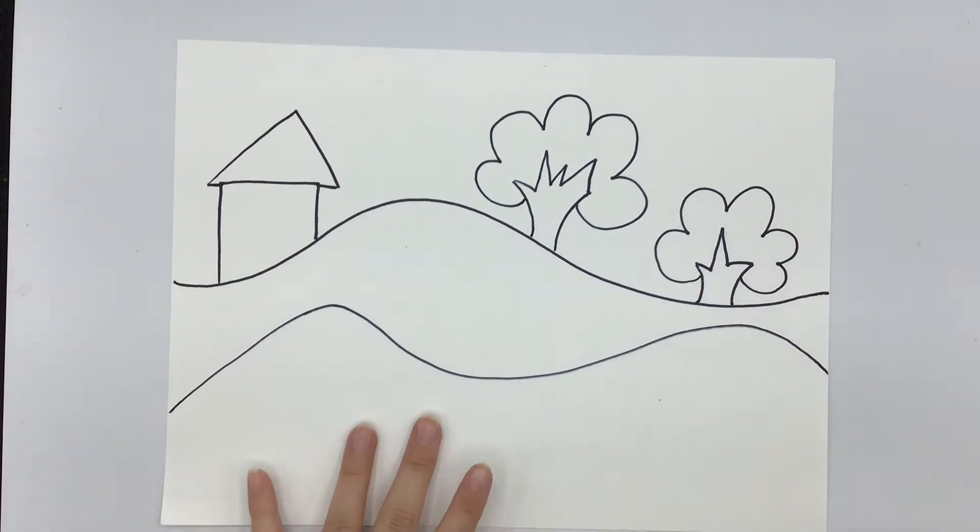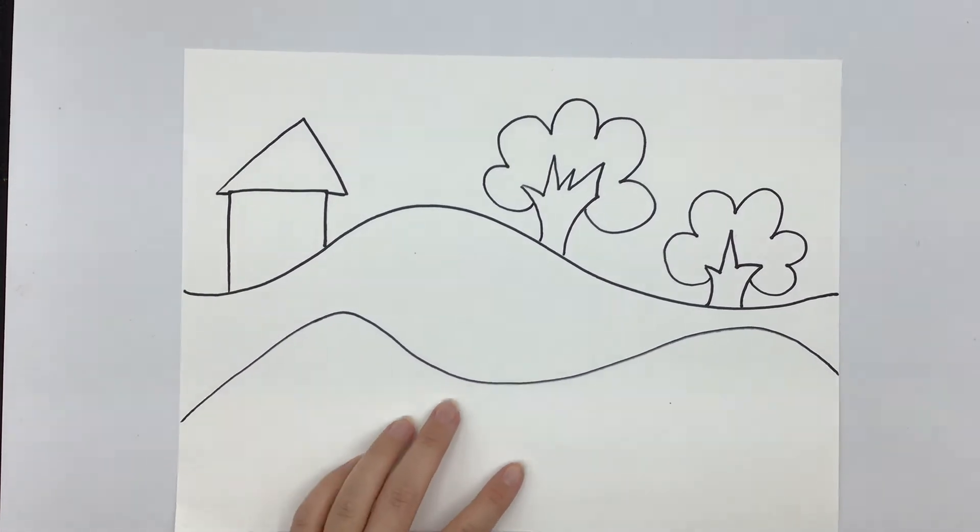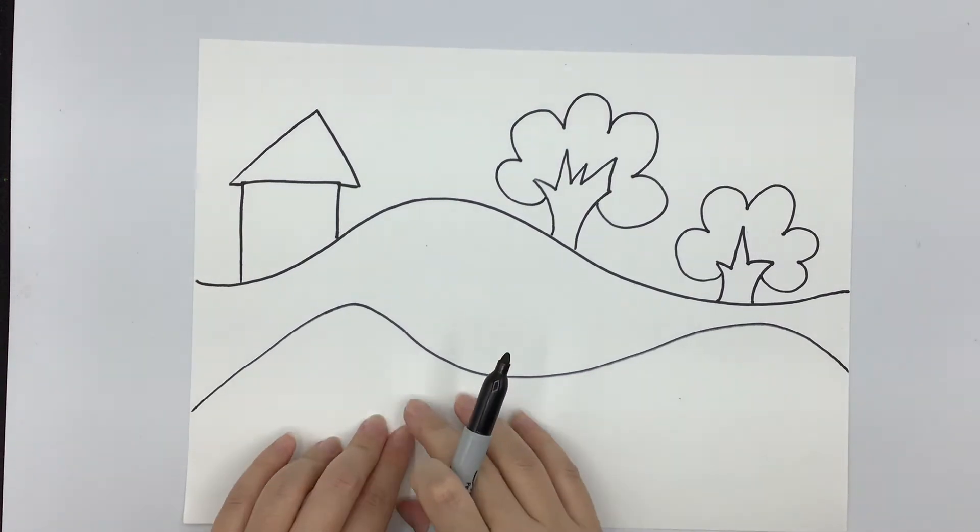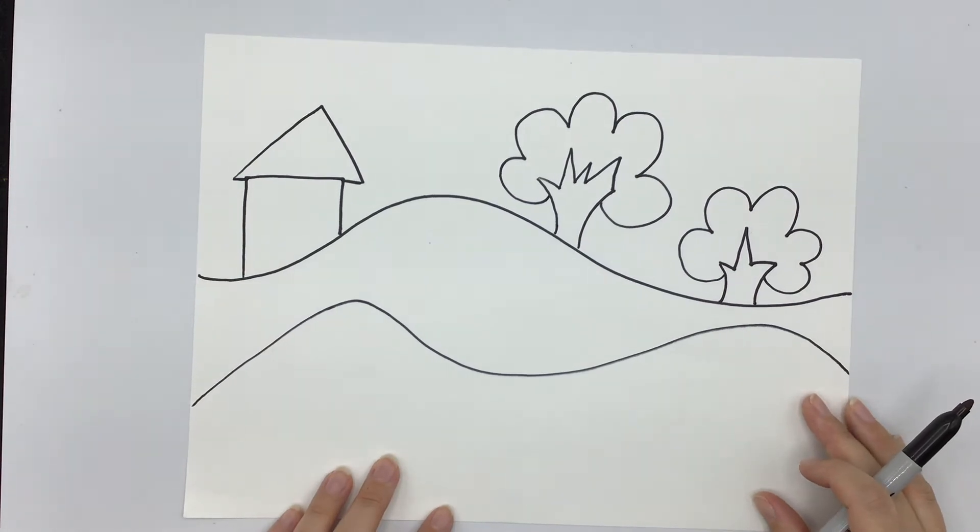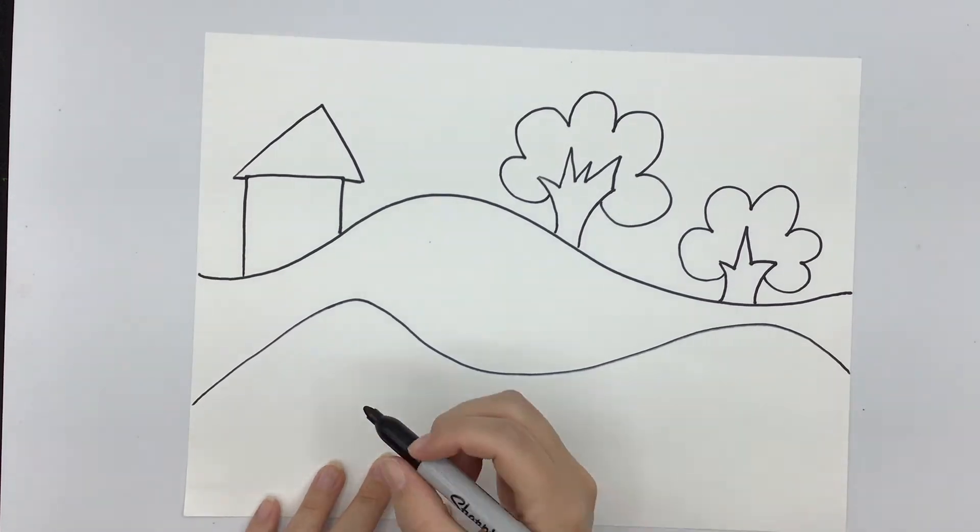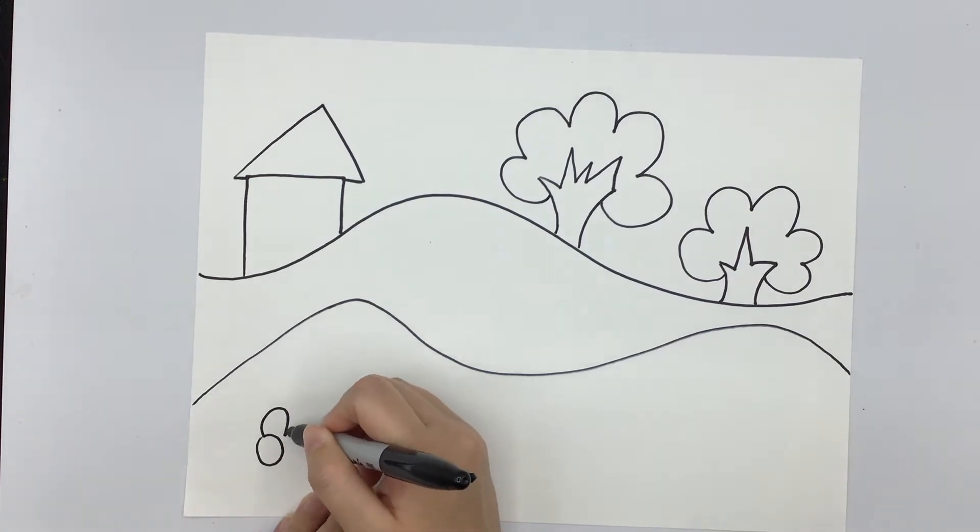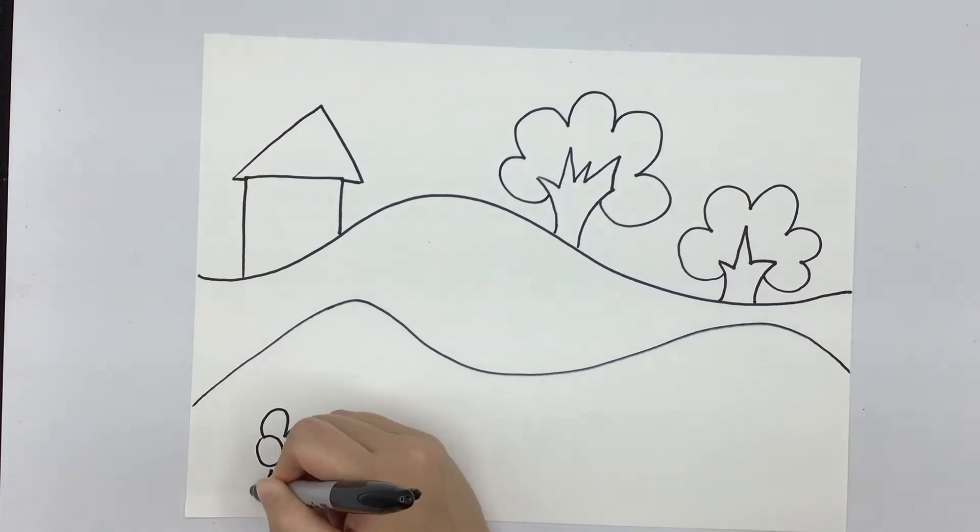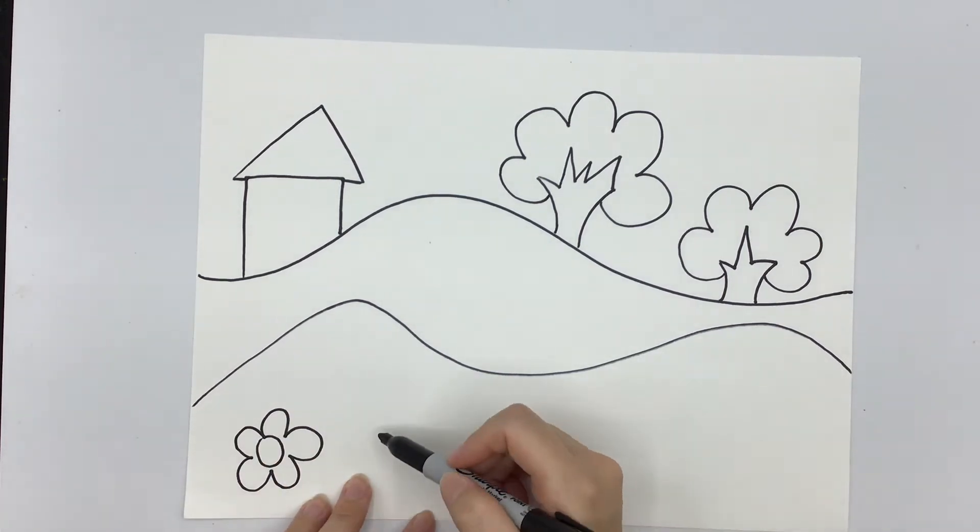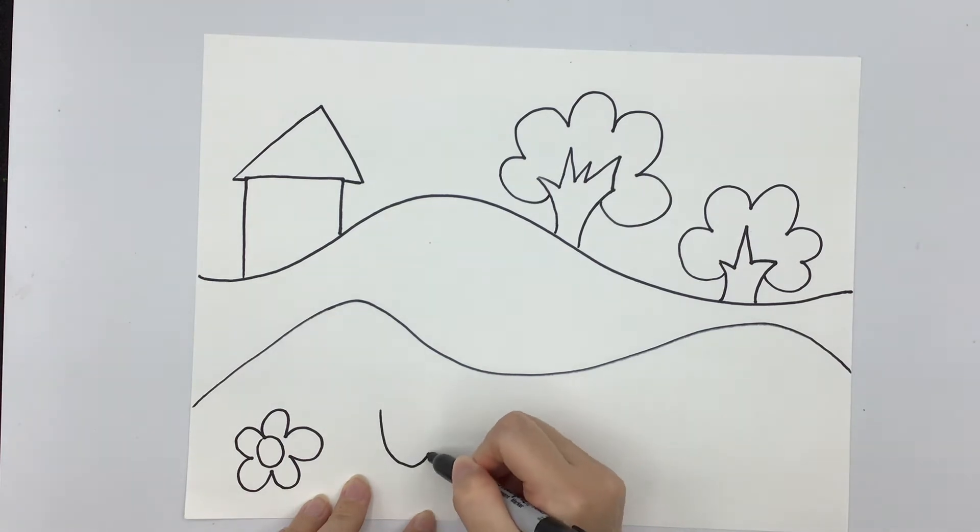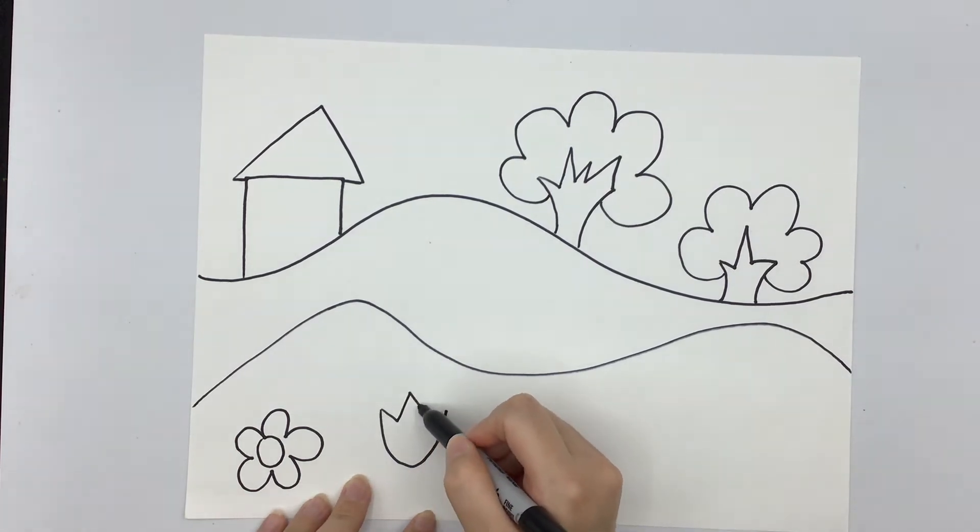Now it's time to add some flowers down here in our foreground. And we call it our foreground because it's in the front of our paper, our foreground. So you can kind of decide how you want to draw your flowers. I might draw them a couple different ways. I might draw some with a circle with a jumping line that goes around. I might draw some with a curved line that then has a zigzag line on top.